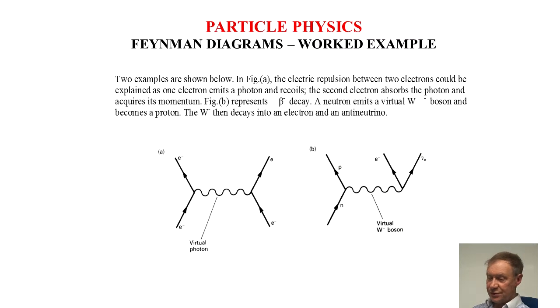and the second electron absorbs the photon and acquires its momentum. Figure B represents beta minus decay. A neutron emits a virtual W minus boson and becomes a proton.